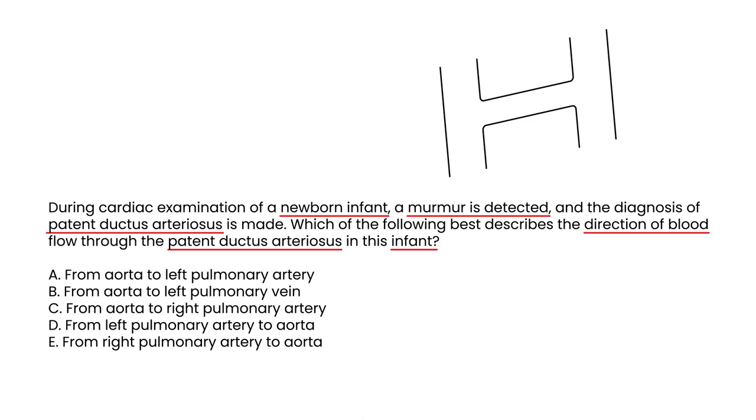So the blood is going back because the pressure gradient has reversed. And if you remember, this part here is the ductus arteriosus—DA, ductus arteriosus. But what are these vessels? Well, this one was the aorta, and this one was the left pulmonary artery. So what they're asking for is the direction of blood. So the direction of blood is from the aorta to the left pulmonary artery, and that would be choice A.